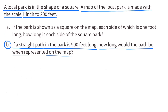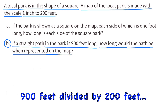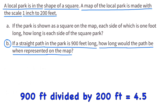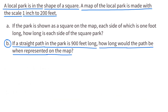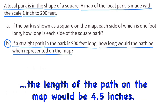If a straight path in the park is 900 feet long, how long would the path be when represented on the map? 900 feet divided by 200 feet equals four and a half. The length of the path on the map would be four and a half inches.